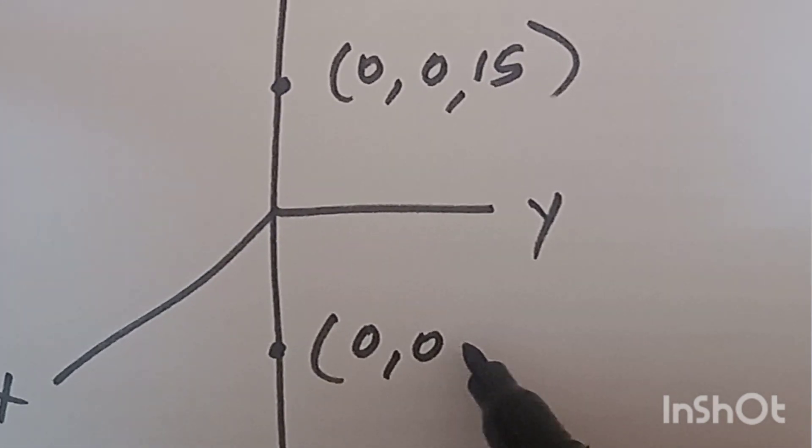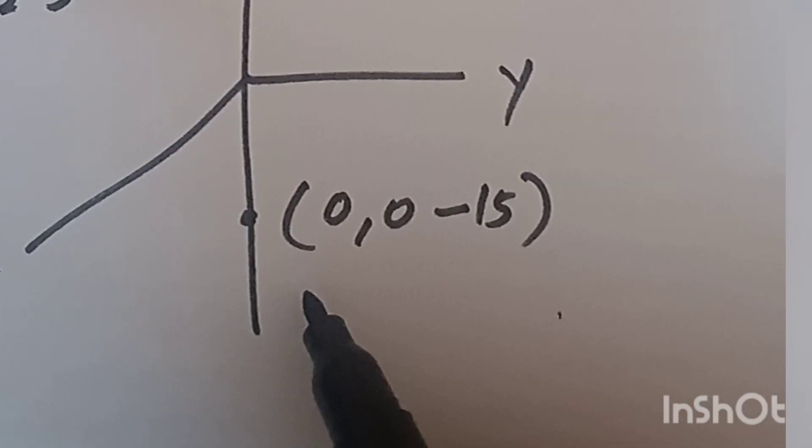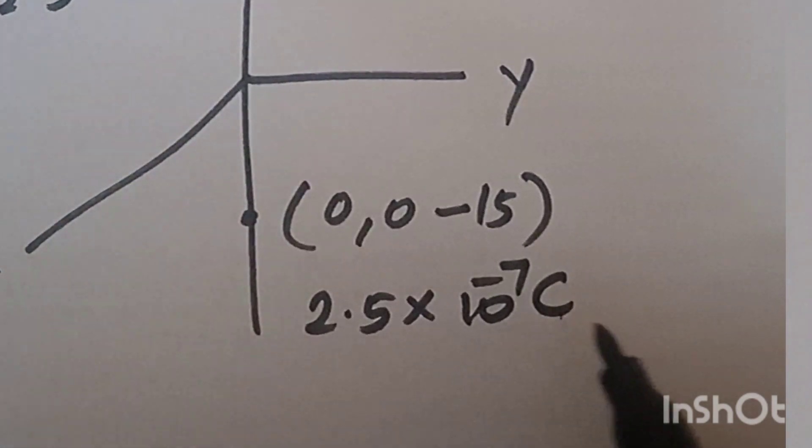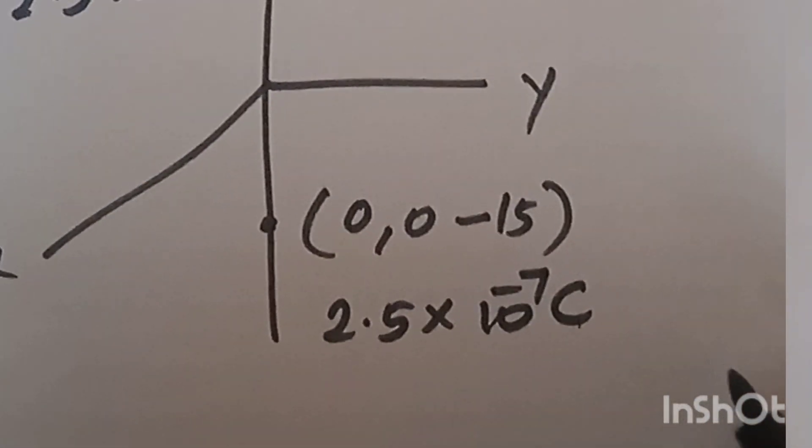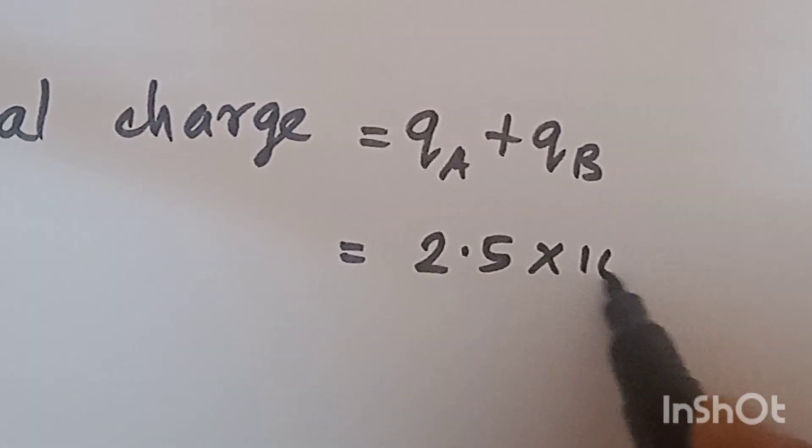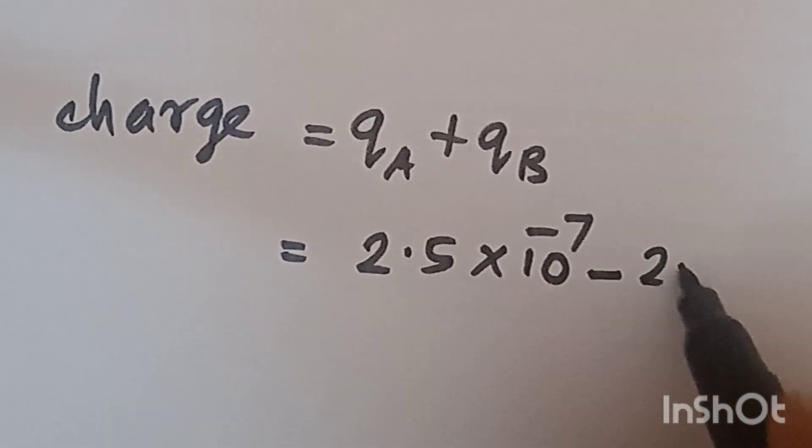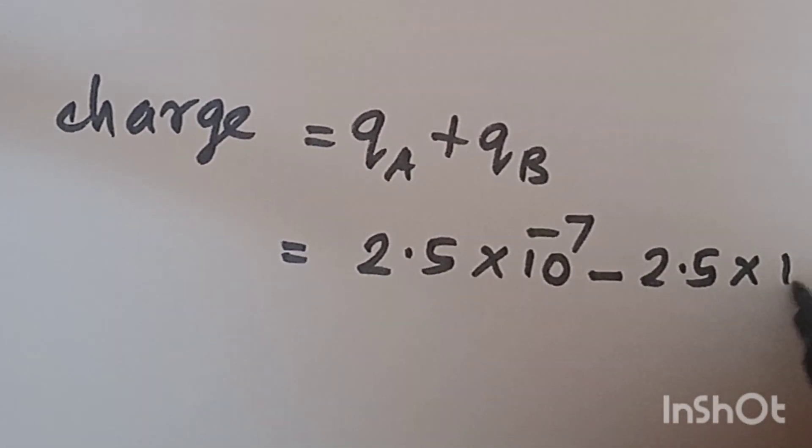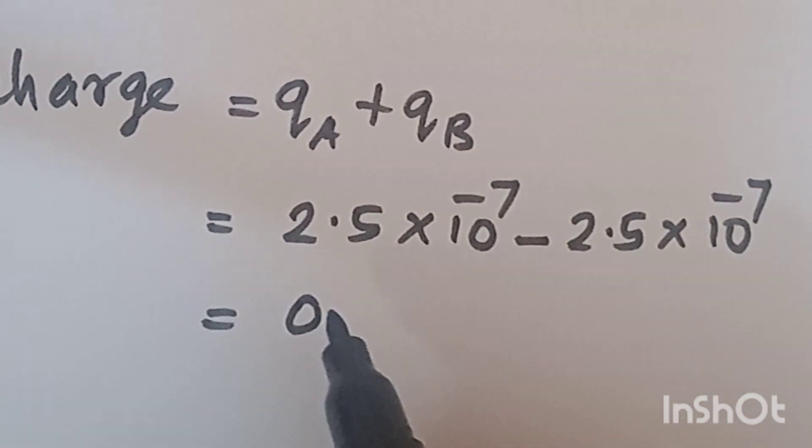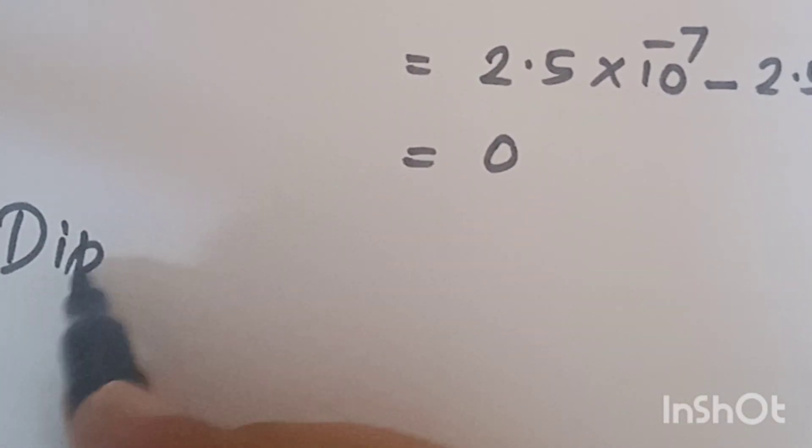Here is minus 2.5 into 10 power minus 7 coulomb and here is 2.5 into 10 power minus 7 coulomb plus. Total charge is QA plus QB, so 2.5 into 10 power minus 7 minus 2.5 into 10 power minus 7. Therefore, total charge is 0.